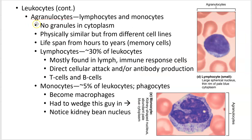Moving on to agranulocytes — lymphocytes and monocytes — these cells have no granules and clear cytoplasm. They can look similar to each other, though large lymphocytes aren't closely related to monocytes; they come from different cell lines. Their lifespan varies: some B cells can live for years or decades, while others live only a few hours or a couple of days.